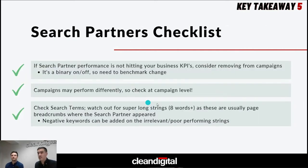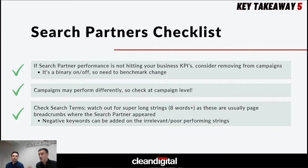As a checklist: if Search Partner performance isn't hitting your KPIs, unfortunately there's not much more you can do than turning it on or off — there's no way to bid down by 50%. Check it at account level: if it's about equal with Google Search, probably keep it. If it's significantly worse, take that wasted spend and reinvest it in Google Search where campaigns are performing higher. Campaigns can perform differently on Search Partners, so you can go campaign by campaign — exclude some campaigns. Also check search terms and look for super-long strings of eight words or more, as those are almost always from Search Partners matching to breadcrumb trails.